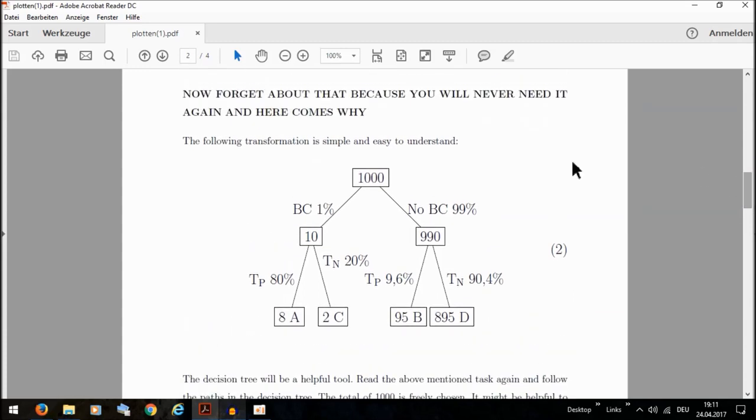I choose for this task 1000 people. Well, if you don't know what a decision tree is, now you can see a decision tree.